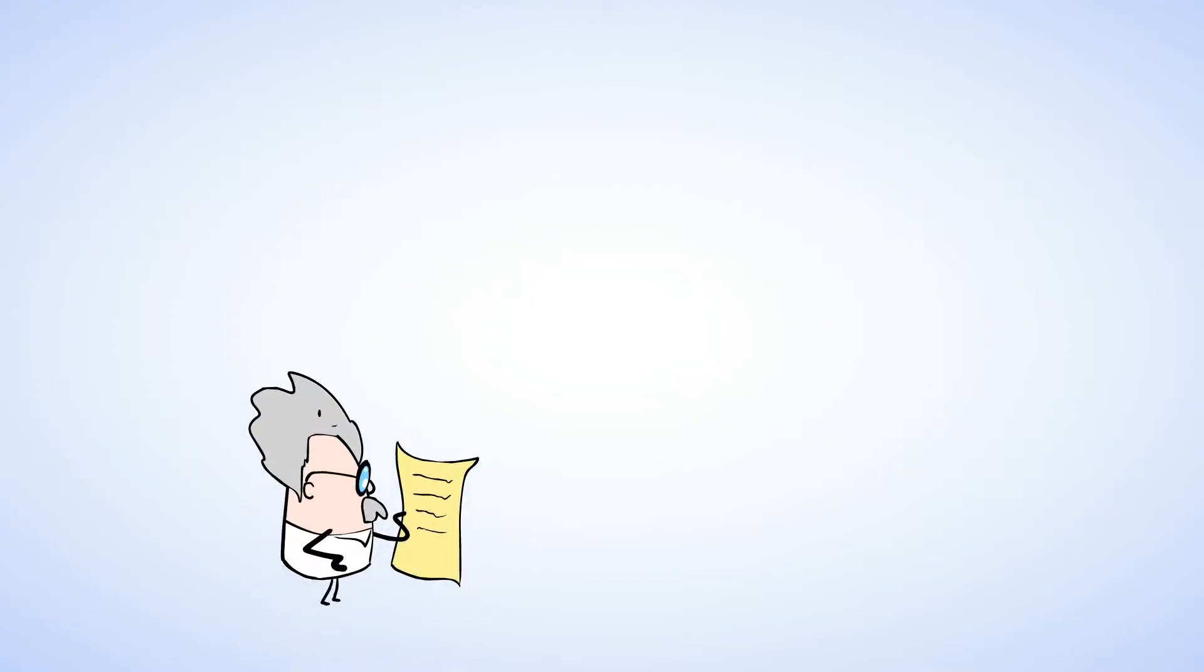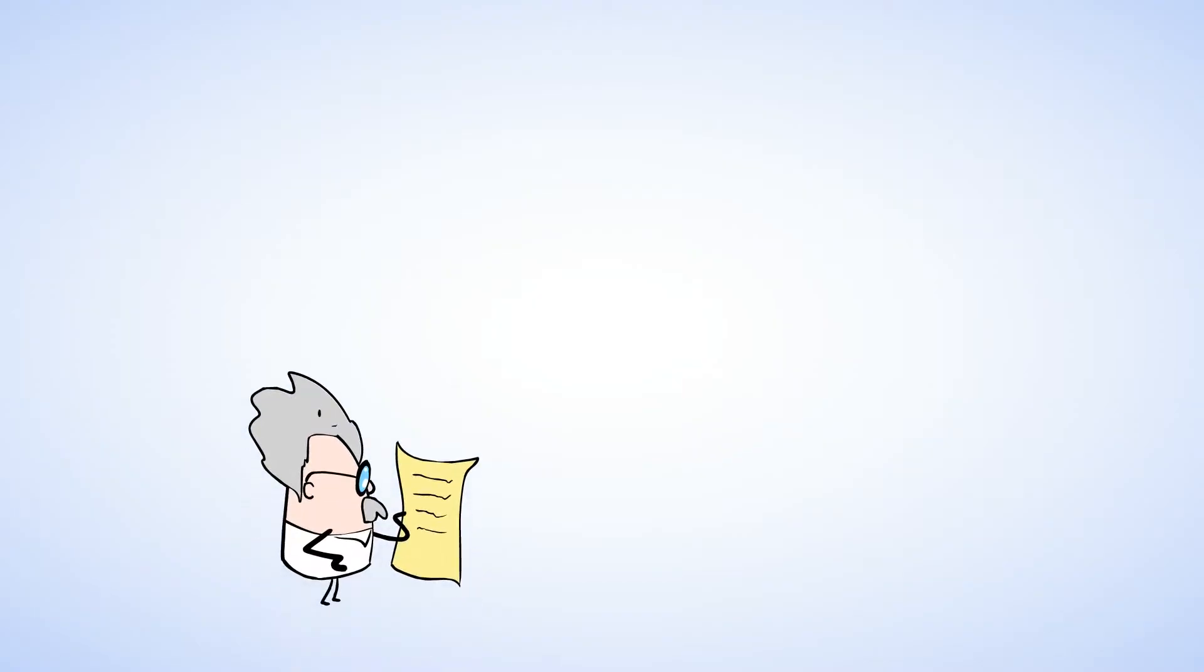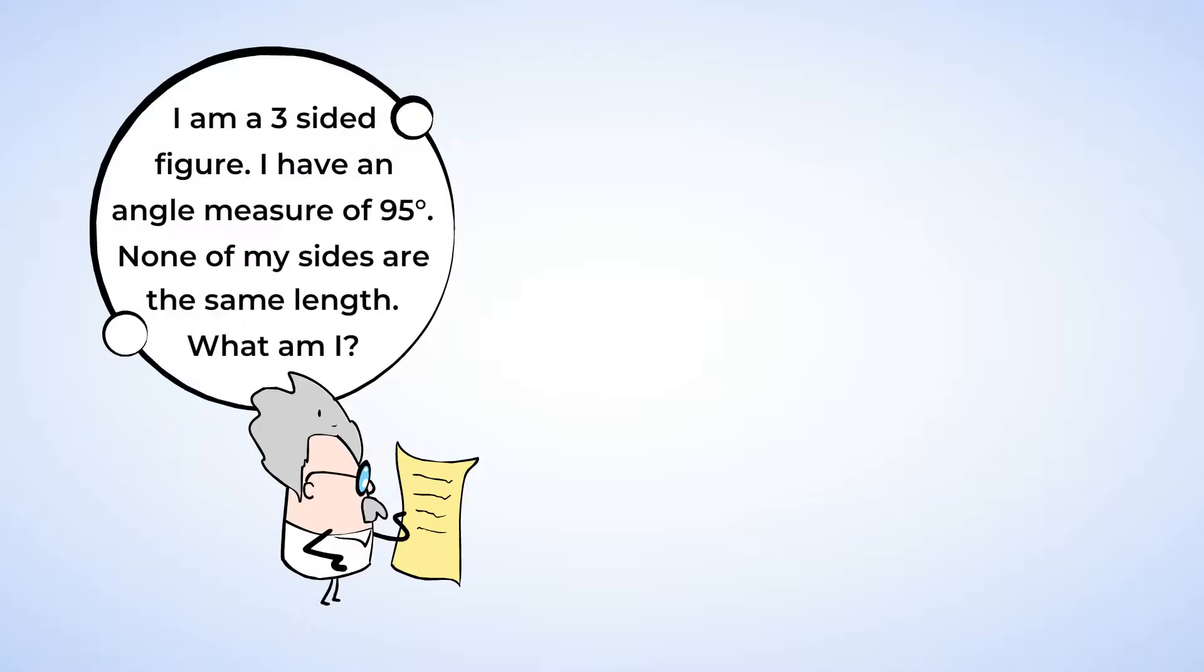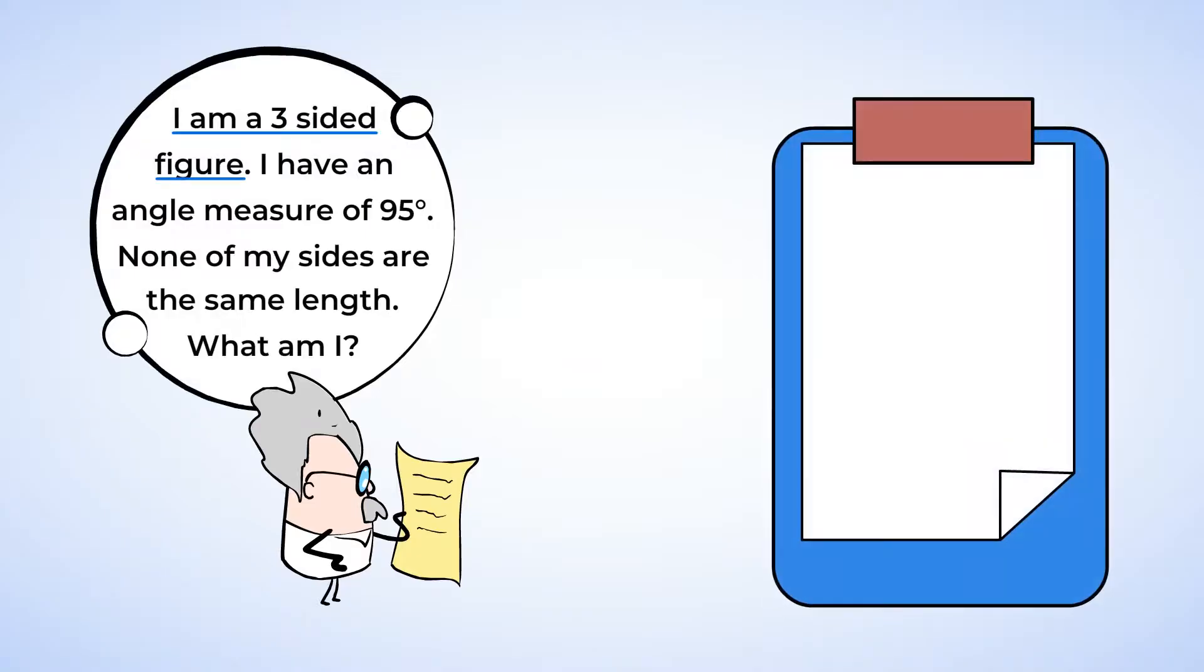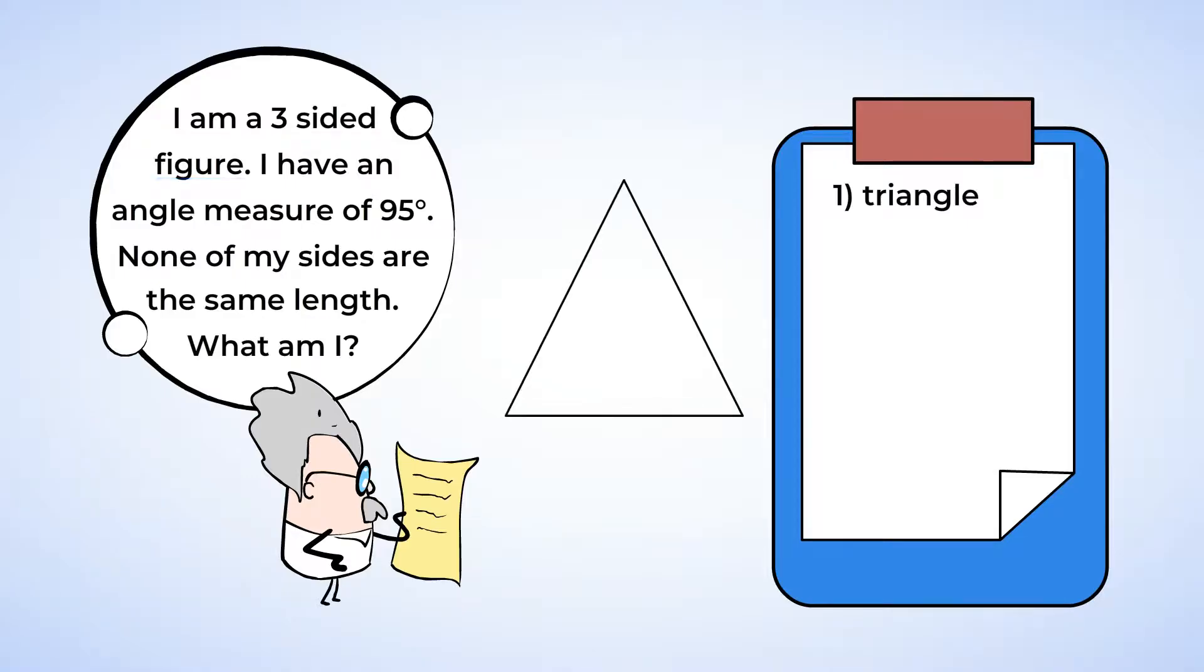Which shape matches all our clues? Listen to the clues one after another. I'm a three-sided figure, and that means that this is a triangle. The next clue reads, I have an angle measure of 95 degrees. Since the angle is over 90 degrees, this automatically makes the triangle an obtuse triangle.